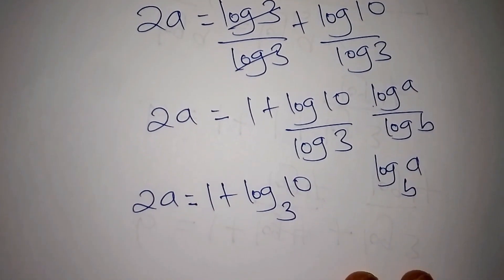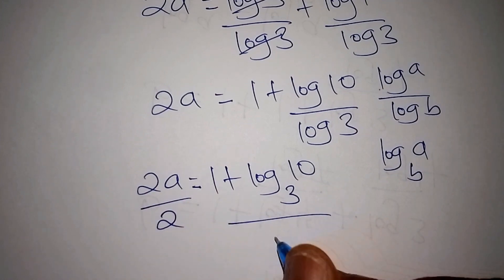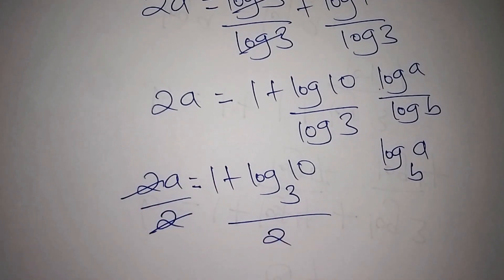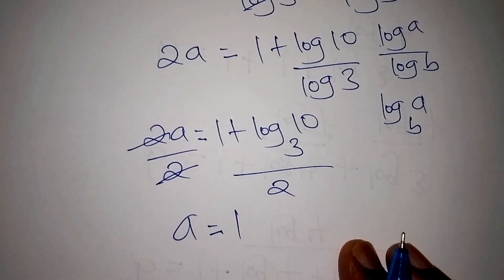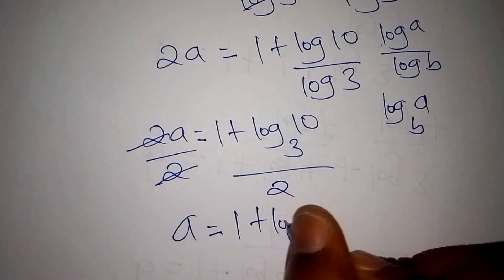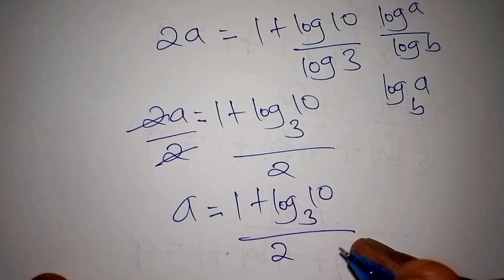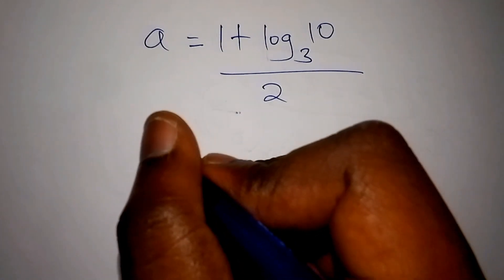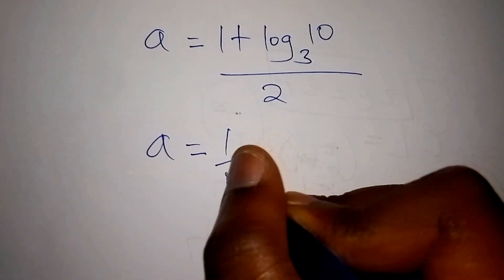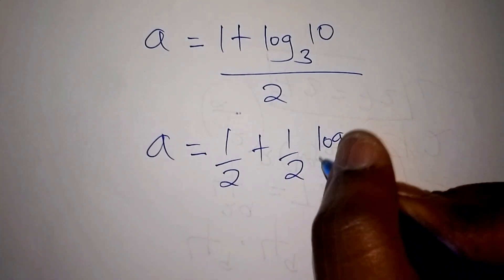In order to remain with A alone, we divide both sides by 2. So A equals 1 plus log of 10 to the base 3, all over 2. Simplifying, A equals one-half plus one-half times log of 10 to the base 3.